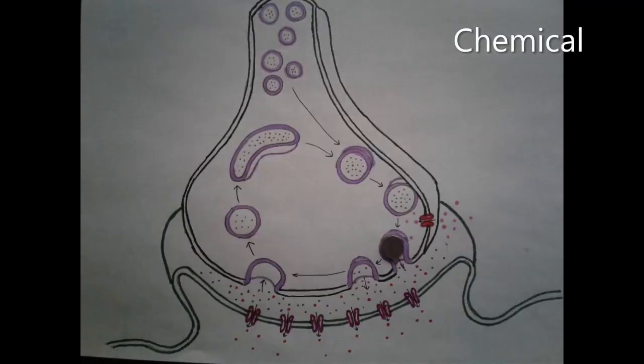At the chemical synapse, neurotransmitters are made and stored in small parts called synaptic vesicles. These vesicles will then dock on the surface of the pre-synaptic neuron until they are needed.